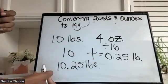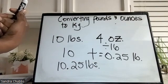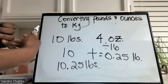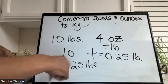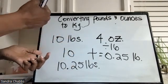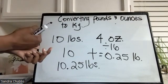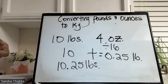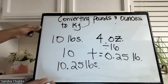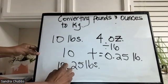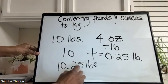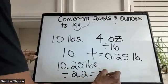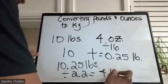Now we can actually convert it to kilograms. 2.2 pounds is equivalent to one kilogram. So to convert pounds to kilograms, we divide by 2.2. To convert kilograms to pounds, we multiply by 2.2. So we're going to convert this to kilograms by dividing by 2.2, and that gives us 4.655.